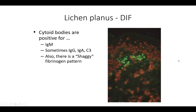On DIF, cytoid bodies are positive for IgM most often, and sometimes IgG, IgA, and C3. With fibrinogen staining on immunofluorescence, you'll often find a shaggy fibrinogen pattern. A DIF is not critical to diagnose lichen planus, but it can help separate from other autoimmune bullous dermatitis that presents similarly on H&E, or for ruling out autoimmune reactivity in bullous lichen planus.